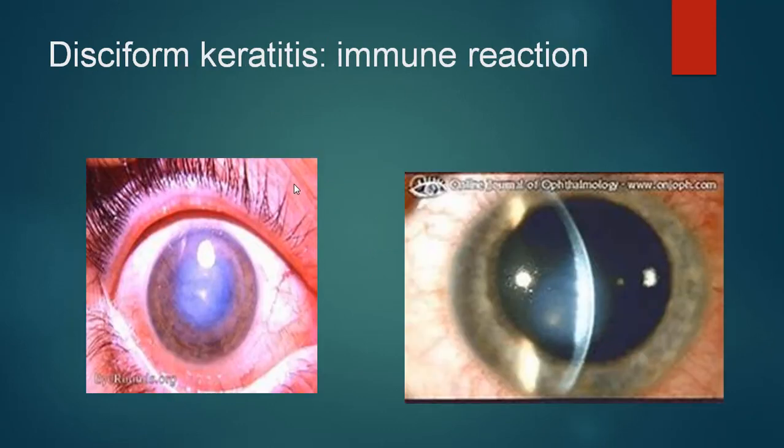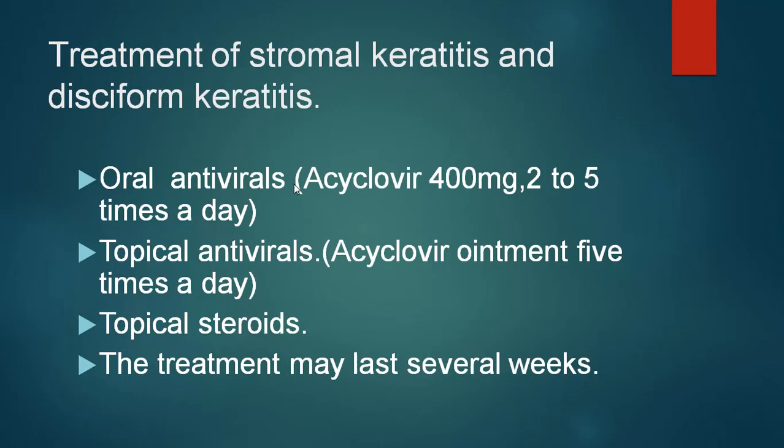Here you see two pictures of disciform keratitis — a disc-shaped central lesion where the cornea is hazy. With the slit beam on the other side, you can see the central area of the cornea is thickened. The periphery is normally thicker, but here the central area is thicker. The treatment of stromal keratitis and disciform keratitis is comparatively more complex than epithelial keratitis. You have to use oral antivirals, topical antivirals, and in addition topical steroids — which are contraindicated in epithelial keratitis. Treatment may last for several weeks.